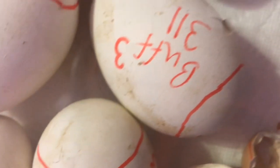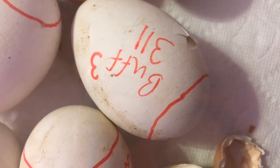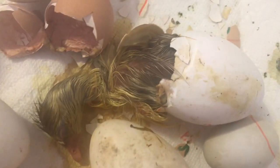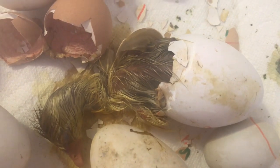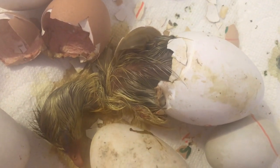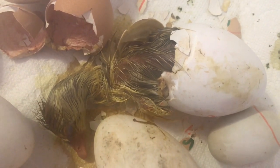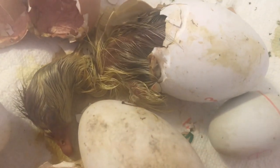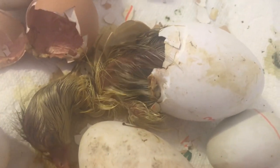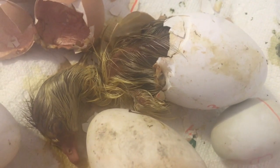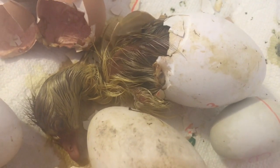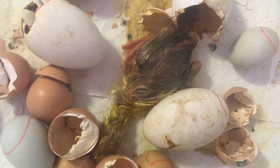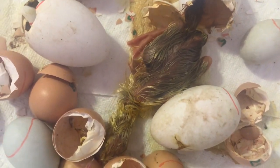After pipping, it will begin to zip, which is a process where it goes all the way around the egg and continues to break the shell until it's able to bust free. The hatching process takes a lot of energy, so they'll take a lot of naps as you can see here, and the hatching process from start to finish can actually take up to three days for geese. He's now kicked himself free from the eggshell, so the hatching process is now complete.